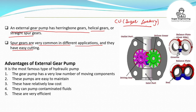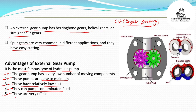This gear is used in cane unloaders in sugar factories. These pumps are used to grab and unload cane onto the cane carrier. Advantages of external gear pumps: it is the most important type of hydraulic pump; it has a very low number of moving components; these pumps are easy to maintain; they are relatively low cost; they can pump contaminated fluids; and they are very efficient.